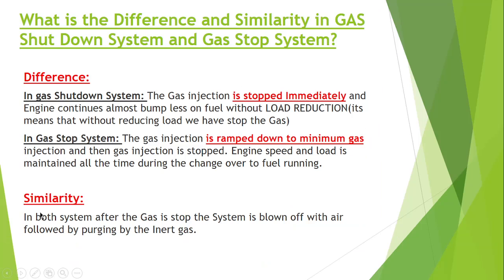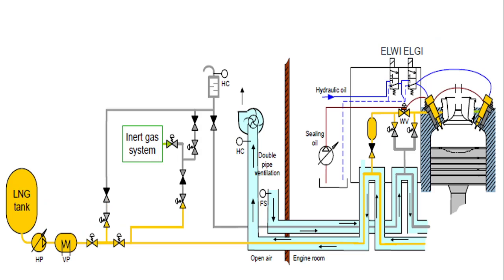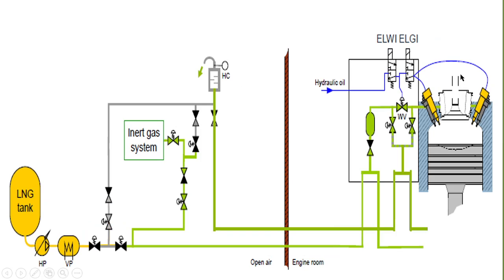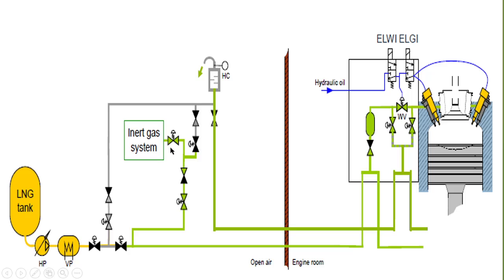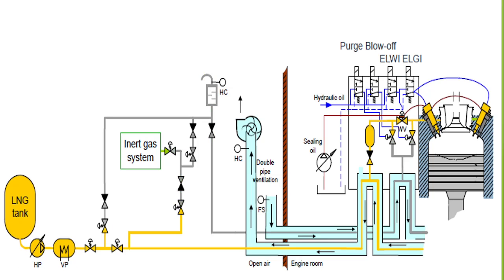In both systems, after the gas is stopped, the pipeline is first blown off with air, followed by purging with inert gas. When there is a gas failure, the gas is first stopped, then blown off by air, and then the inert gas purges the remaining gas present in the pipeline. This is how the system is prevented from any further damage.